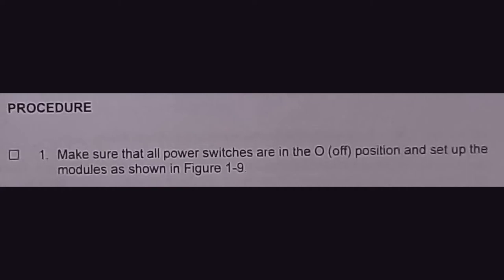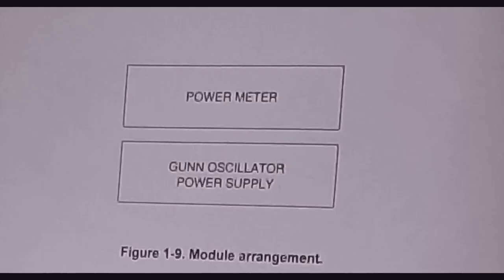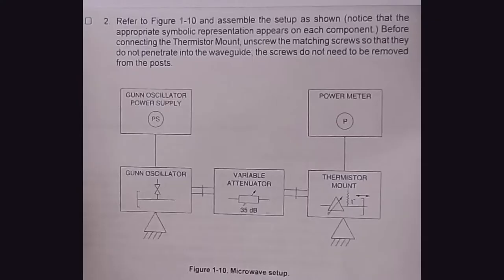Let us start the experiment. Make sure that all the devices are at zero. In the experimental setup, the gun oscillator is connected with the gun oscillator power supply; the variable attenuator is connected to the gun oscillator, followed by the thermistor mount, which is connected to the power meter. The entire setup is placed on the support.